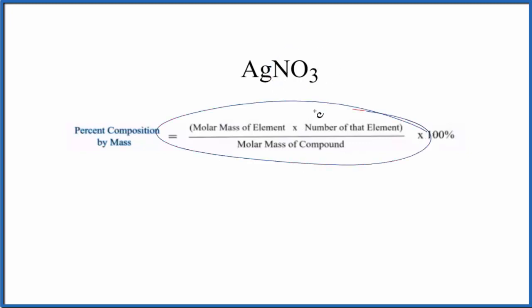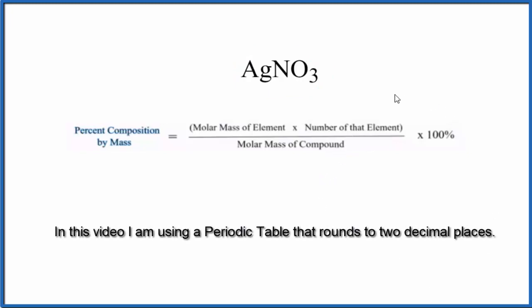So we have this equation here to help us. The first thing we need to do is figure out the molar mass of the entire compound, this AgNO3. We want to know the molar mass for AgNO3. That'll look like this.